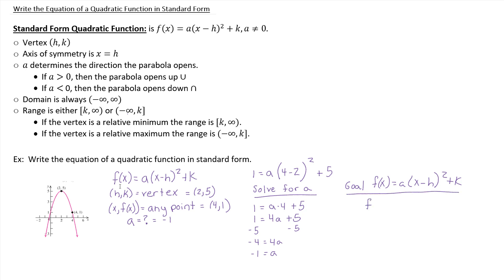So we have f of x equals a is negative 1. So we could just put a negative. That's the same thing. Times x minus our h. So minus 2. And then that quantity is squared. And then plus our k, which is 5. So plus 5. And ultimately we're done. That is our quadratic function in standard form. Which makes sense because our a value is negative and we can see that our graph opens down. We can see from that equation what the vertex is. It's 2, 5. And we can go from there.